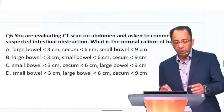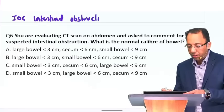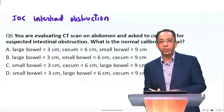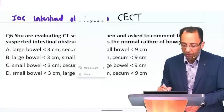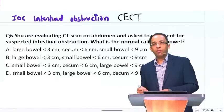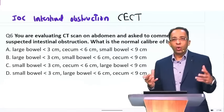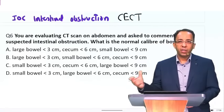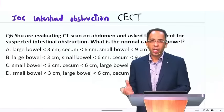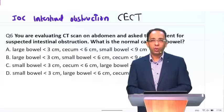A previous FMG question: what is the investigation of choice for intestinal obstruction? The investigation of choice for bowel obstruction is a contrast CT. Why? Because X-ray can tell us if there is obstruction or not, but it cannot tell us the cause or etiology. With a CT, you can tell if it is a malignancy, an internal hernia, strangulation, or adhesions. We can tell what is the cause. Investigation of choice is contrast CT.